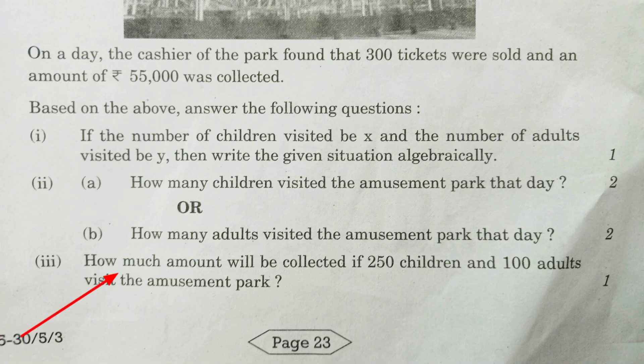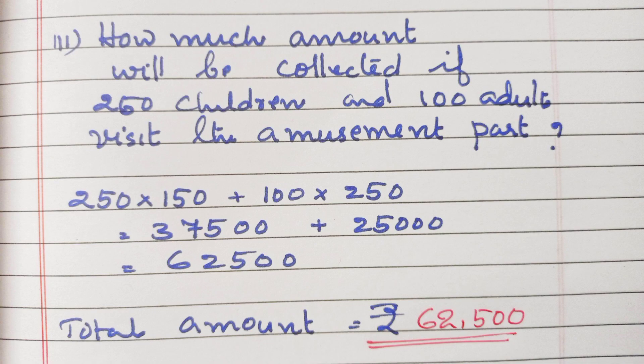The last part of the question is: how much amount will be collected if 250 children and 100 adults visited the amusement park? It's very easy. 250 into 150 plus 100 into 250. We get Rs. 62,500 as the total amount collected on that day.